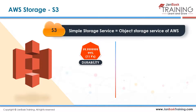AWS stores huge amounts of data - all of Netflix is streamed from AWS, with all its movies, TV shows, and documentaries. Spotify's millions of songs are also served off AWS. The chance of Spotify not being able to serve a stored song is less than one in ten million. That's why Netflix and Spotify are so reliable - they're never down, and if they are, they're back up in minutes.